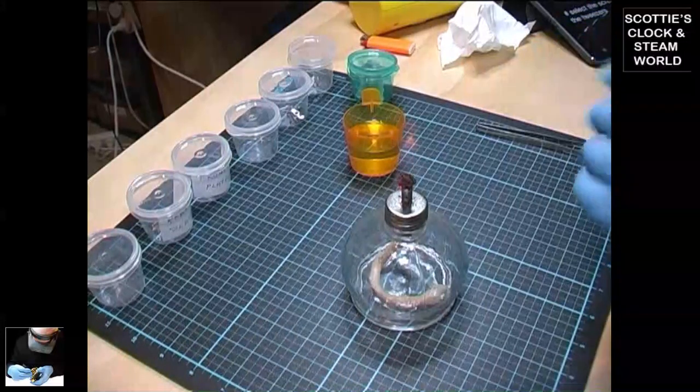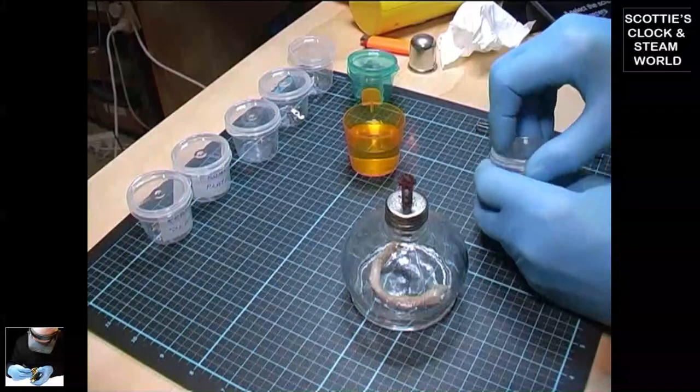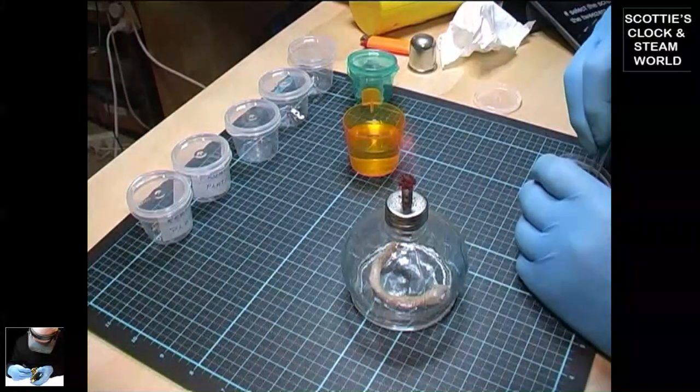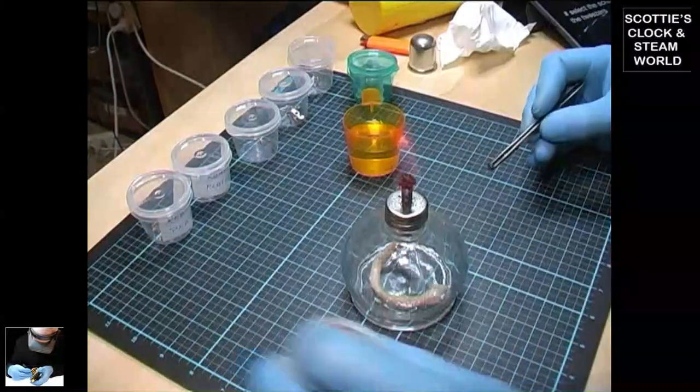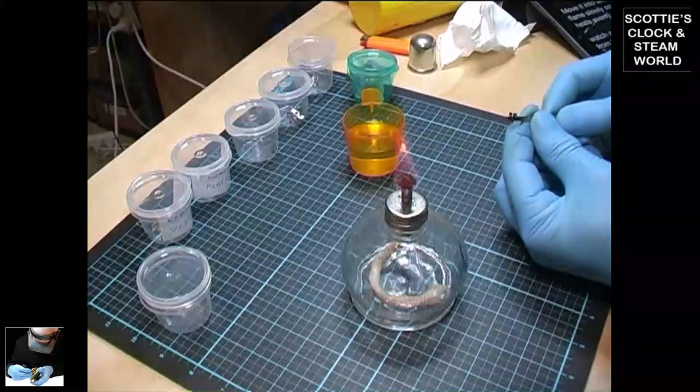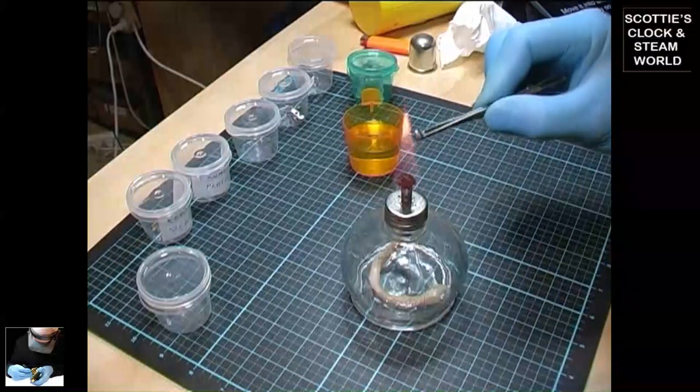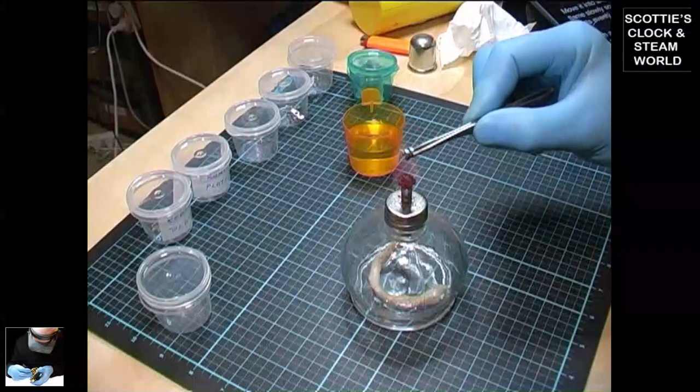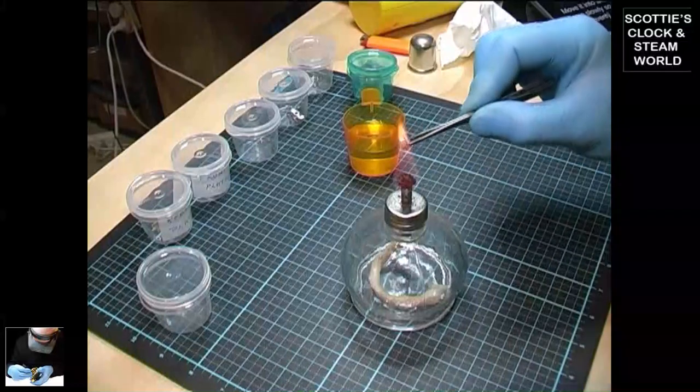Now we select the screw to be blued with the tweezers. Move the screw onto the point of the flame. Move it into and out of the flame slowly so that the screw heats evenly.